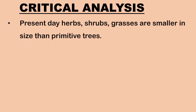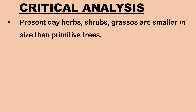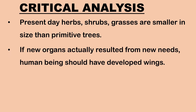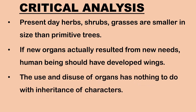Next is a critical analysis of Lamarck's propositions. Lamarck suggested that organisms tend to increase in size, but it is seen that present-day herbs, shrubs and grasses are smaller in size compared to primitive trees. He also suggested that new organs result from new needs — if this were true, then human beings should have developed wings by this time. According to Lamarck, organs which are used extensively become highly developed, while organs which are not used degenerate. This principle is not accepted, as inheritance of a character does not depend upon the use and disuse of parts.